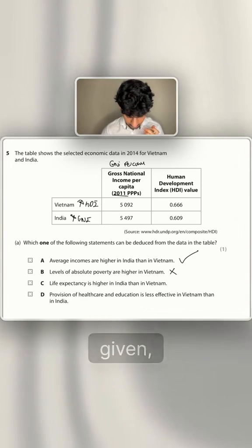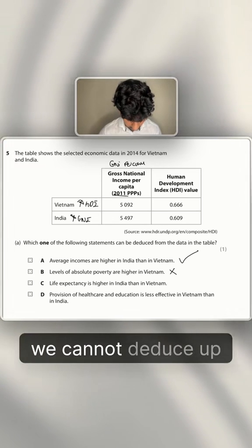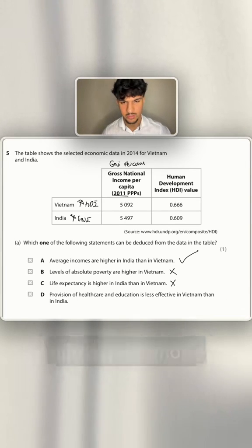Life expectancy is higher in India than Vietnam. Again, we cannot deduce upon the information we've given, because like I said, HDI, although it does take into account life expectancy, we don't have specific stats on life expectancy.